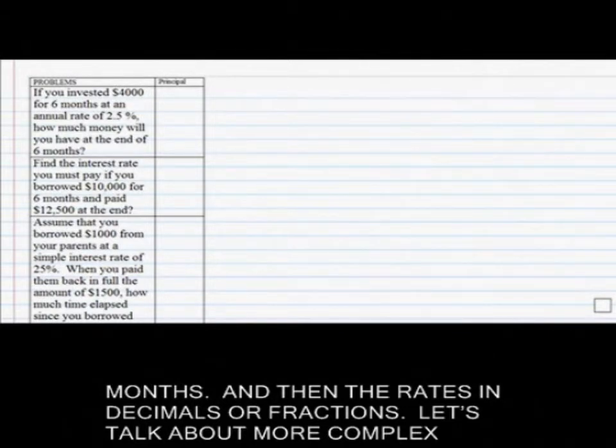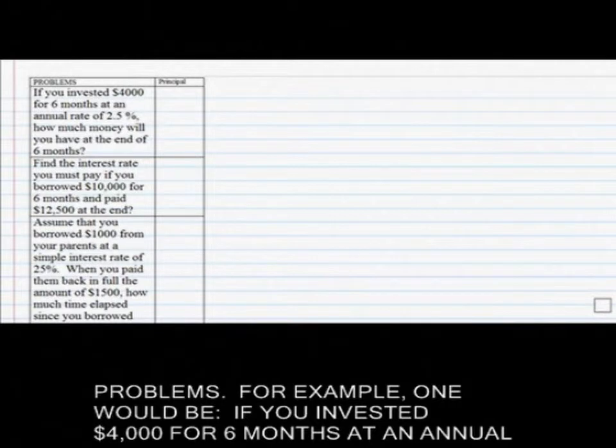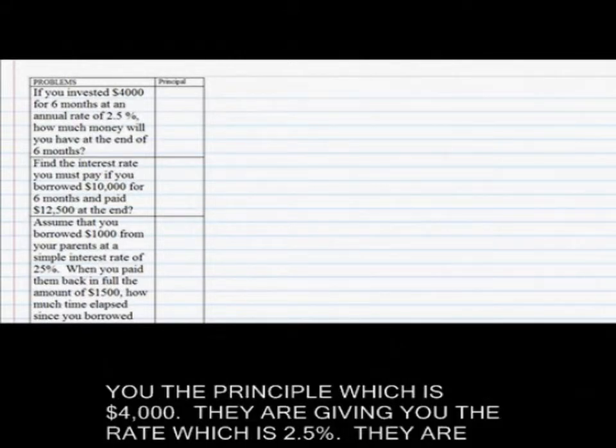Let's talk about more complex problems. For example, if you invested $4,000 for six months at an annual interest rate of 2.5%, how much money will you have at the end of six months? They are giving you the principal, which is $4,000, the rate, which is 2.5%, and the time, which is 6 over 12 in years, which is 0.5, half a year.